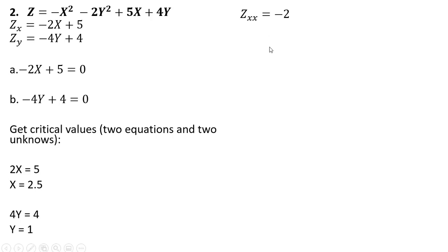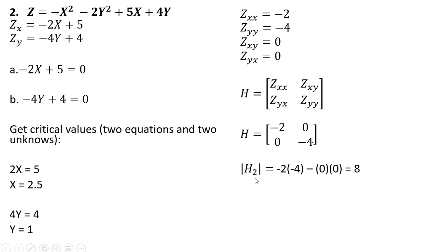Plugging those values into our Hessian matrix. Calculating the determinant, our second principal minor here is positive. And we're going to be at a local maximum given the following conditions.